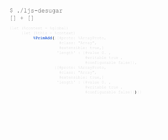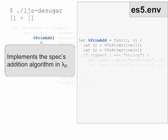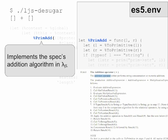As we step inside this expression, we see that it's desugared to an application of a function called primadd. Primadd implements the specification of addition in LambdaJS. This LambdaJS code, again in the environment, corresponds to the 15-step algorithm we saw before.